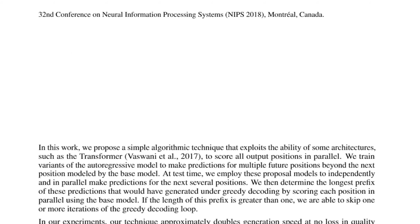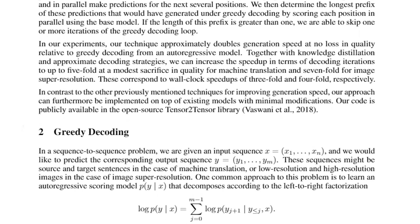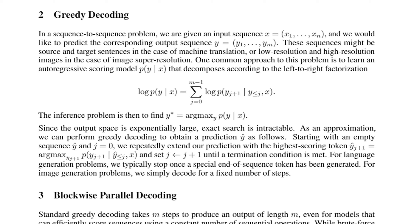The authors tackle this problem by asking: how can we make decoding faster? They introduce greedy decoding formally, where the probability of the next word is the maximum log probability given all input words so far — where x is the source language sentence (e.g. French) and y up to j is the decoded target sentence (e.g. English), predicting y_{j+1}. Greedy decoding does this one step at a time.